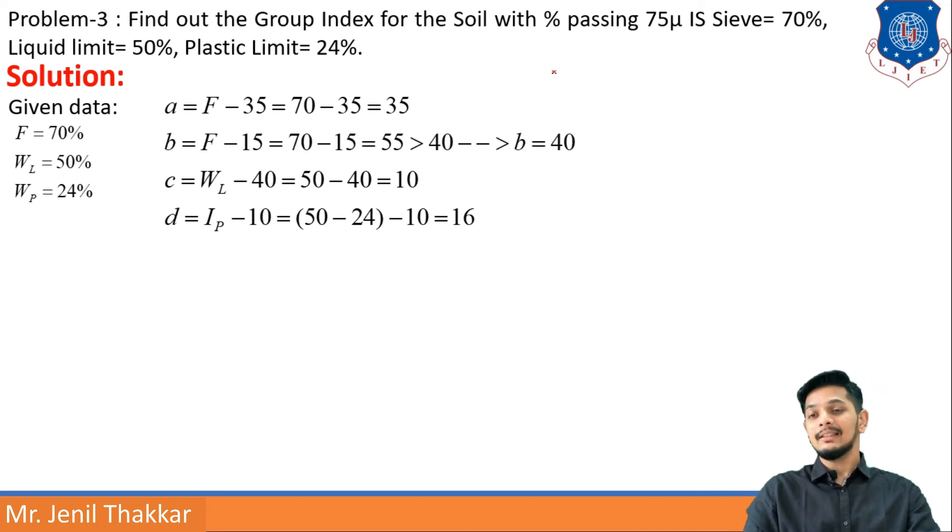A is F minus 35, B is F minus 15, C is WL minus 40, and D is IP minus 10. F, WL, and IP are provided. Putting all the values, I am getting A as 35, B is 55. Now B cannot be greater than 40.